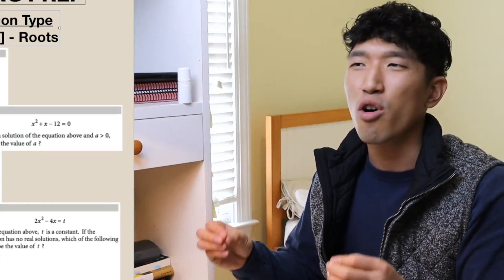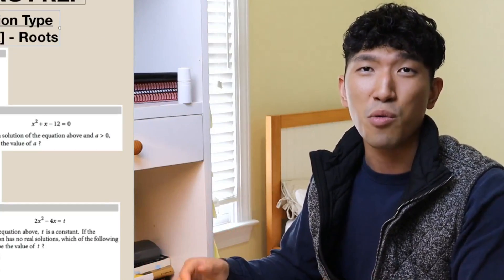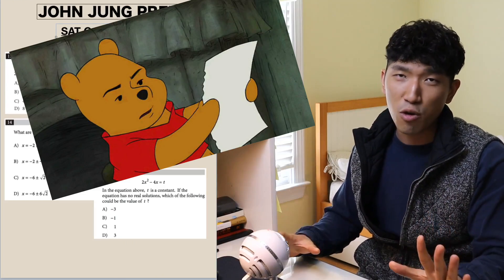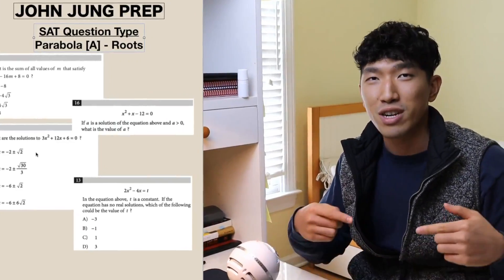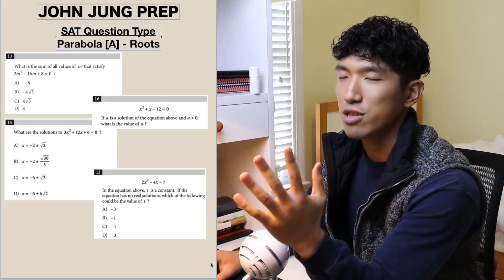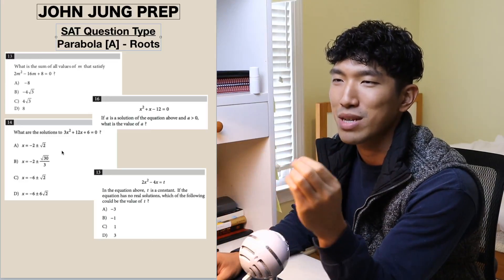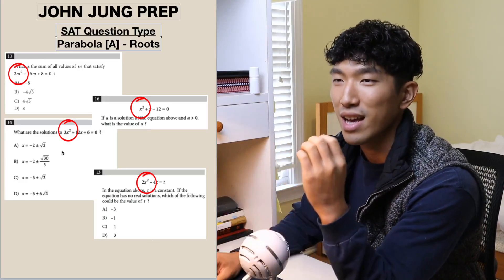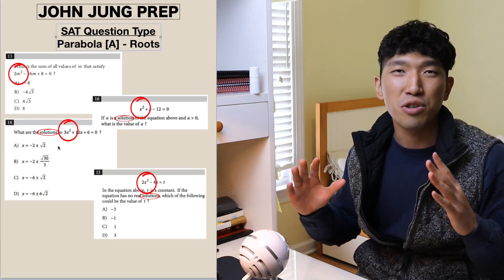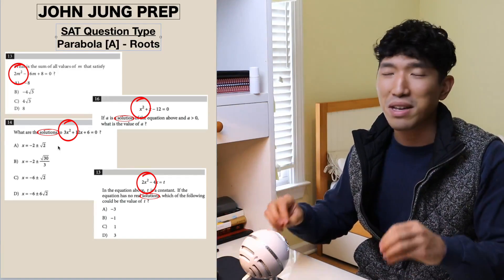If you're taking the SAT at some point, you are going to see these quadratics slash parabola questions — it's inevitable. To solve these questions, you can either spend five minutes on a single question like 90% of students, or you can use the tactics we're going to go over in this video and only spend 30 seconds, get the question right, and start raising your SAT score. These questions are super easy to recognize: they'll have a variable to the square power and they'll talk about solutions a whole lot.